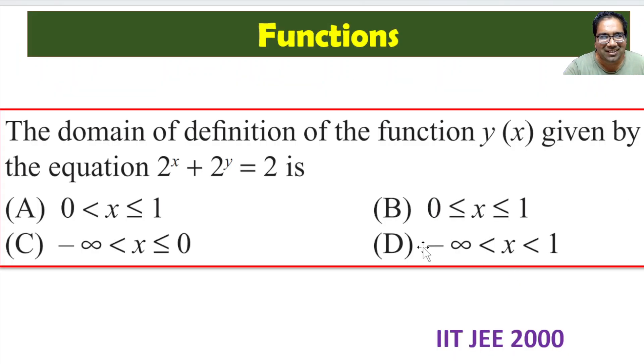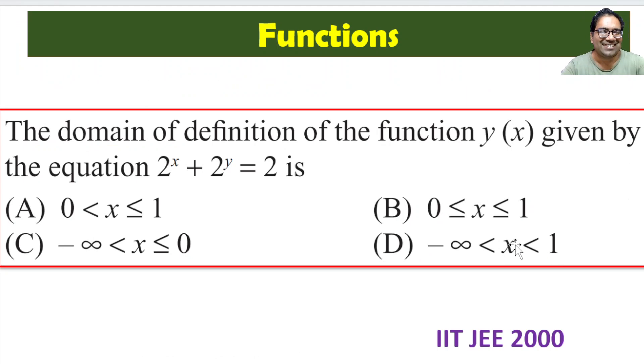So the correct answer is: -∞ < x < 1. We can say the same about y as well. The key insight is that 2^x is always positive, so both terms must individually be less than 2, meaning x < 1 and y < 1. Hope you liked this — thank you!